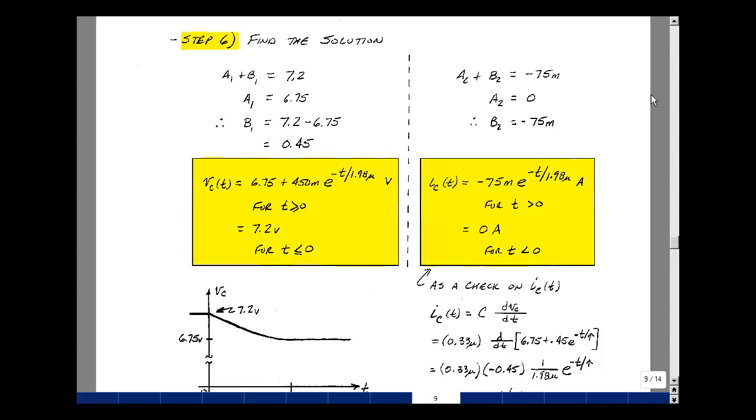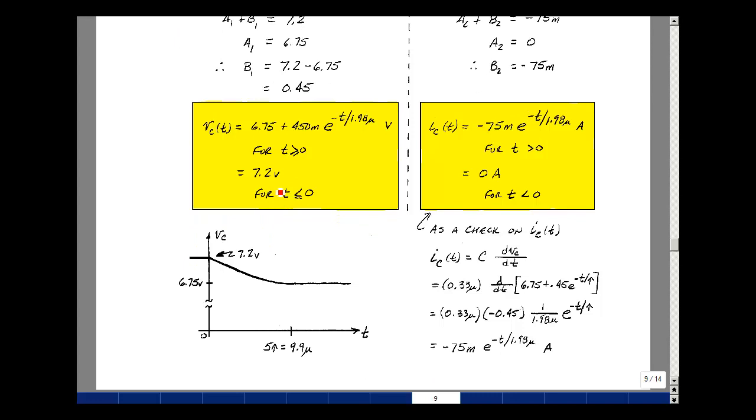Let's see if we can graph the capacitor voltage. For t less than zero, I had 7.2 volts, and then I have this exponential. It starts out at 6.75 plus 0.45, again 7.2. But then as time goes on, this term drops out, and we eventually approach 6.75. Now it'll reach that as t approaches infinity, but we said in the class notes that infinity was effectively five time constants. If we multiply this by five, you get about approximately 10 microseconds. The exact value is 9.9. I made a rough sketch between this point and this point to look exponential.